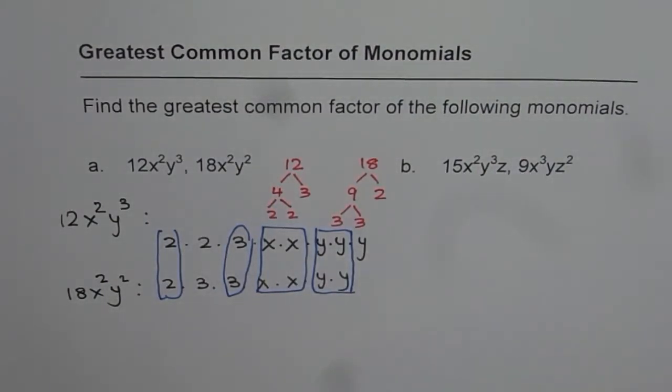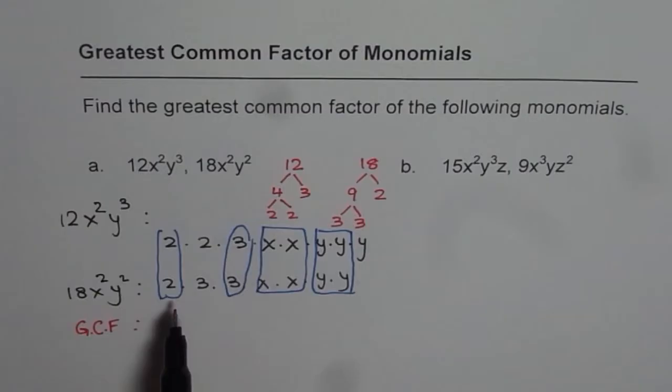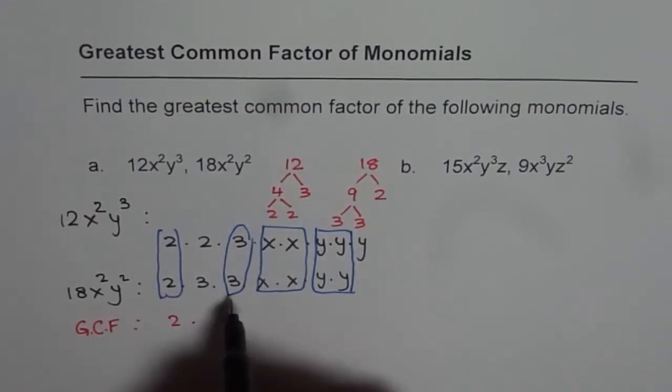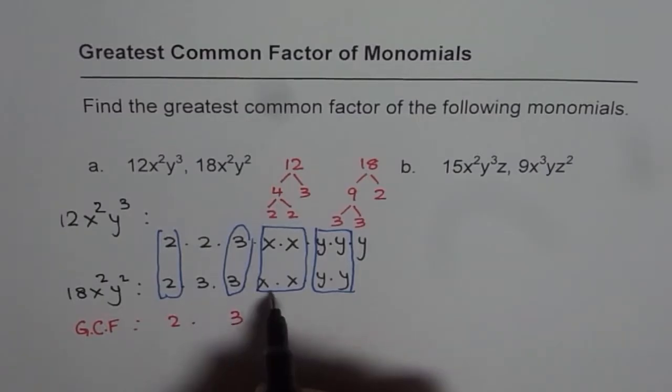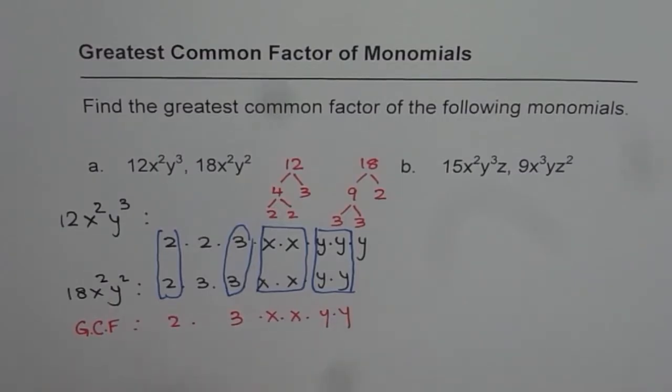Now from the common factors, we will find the greatest common factor. Greatest common factor is multiple of all these. So here we get 2 times, from here we get 3, from here we get x times x times y times y.